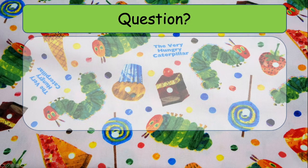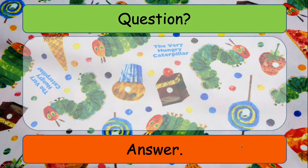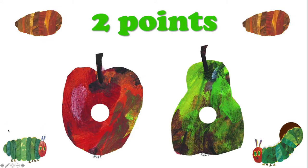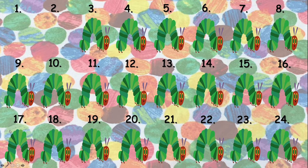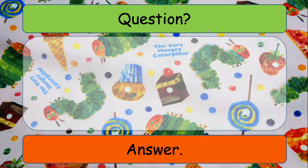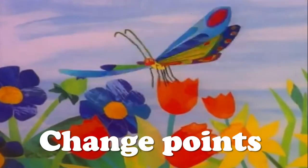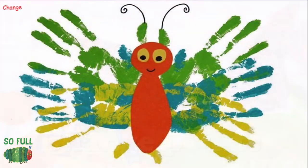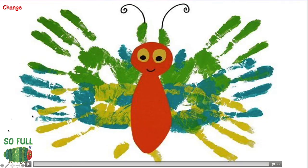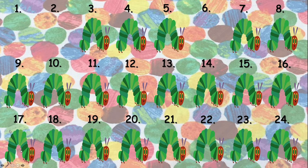Let's choose another one — number two. Question and answer, same as before. Click on the orange box or use the space bar and this time we've got two points. Click on the caterpillar in the bottom left hand corner and you will go back to the main screen. Now I'm going to choose number six — question and answer, and click. So here we've got the change point slide. There's a short video that will play in this slide, and then it will go through to this picture. Click in the bottom left hand corner to take you back to the main question slide.